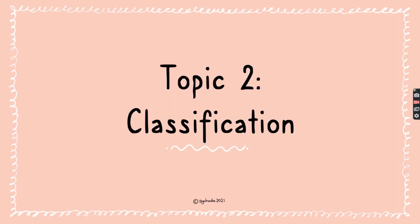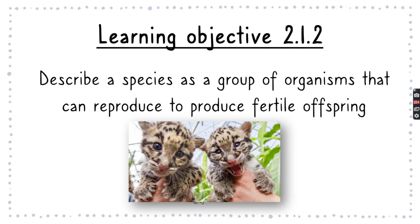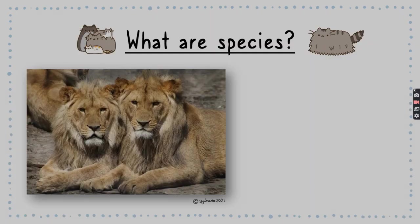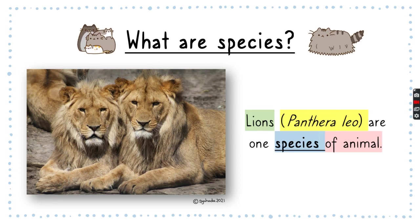Hi everyone, how are you doing this morning? I hope you're doing pretty good. We're going to continue Topic 2 Classification today. If you have your Cornell notes ready, this is your learning objective, which is 2.1.1: describe a species as a group of organisms that can reproduce to produce a fertile offspring.